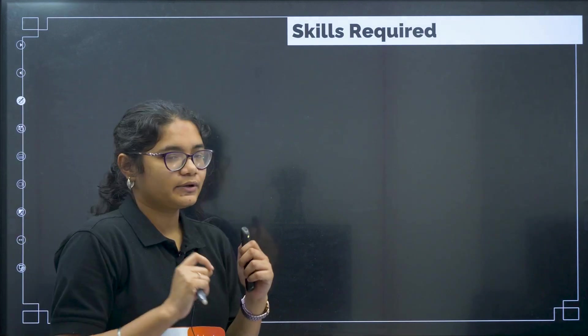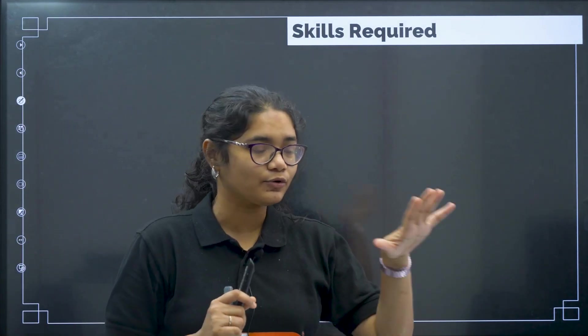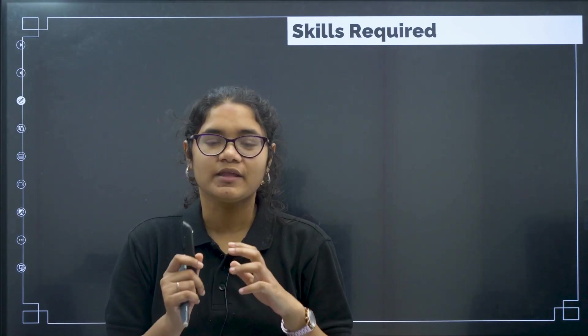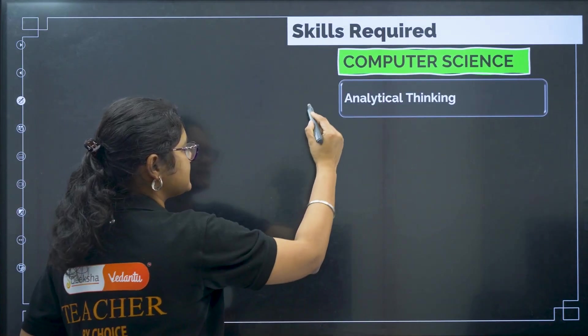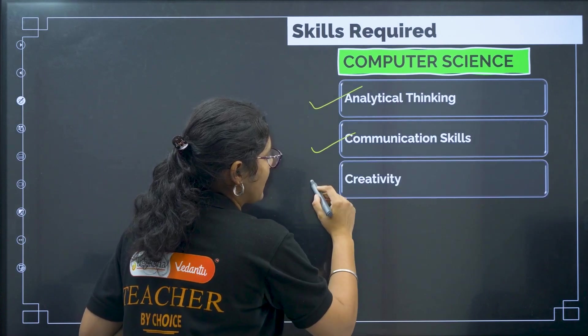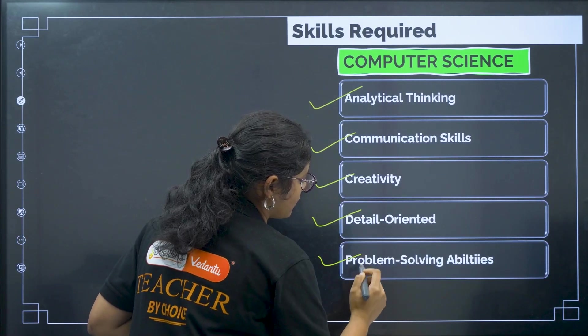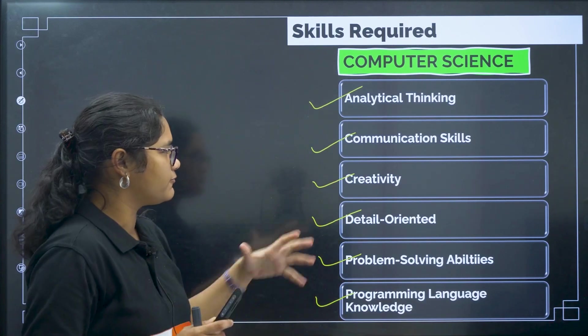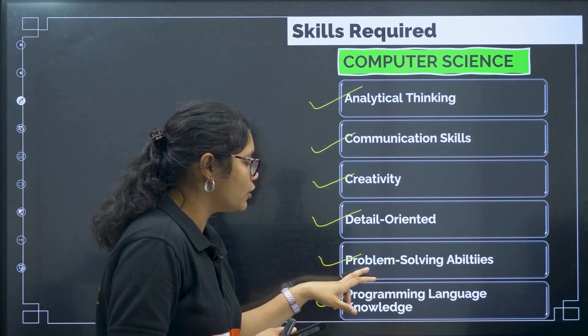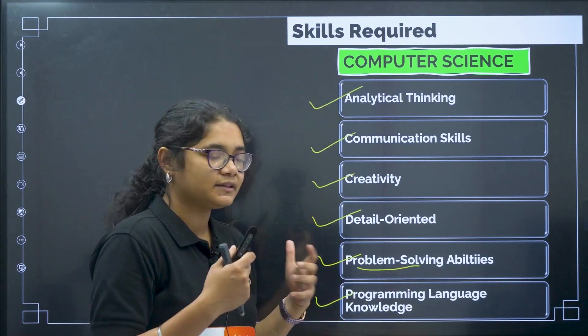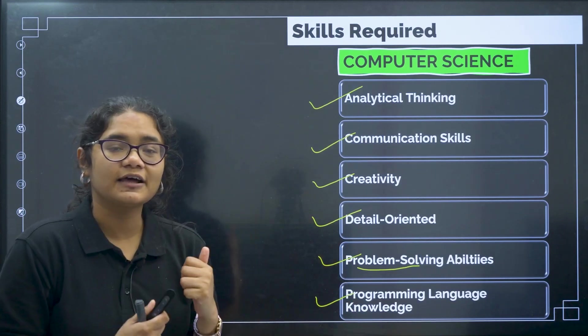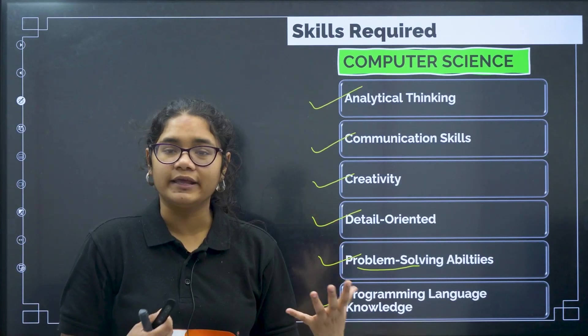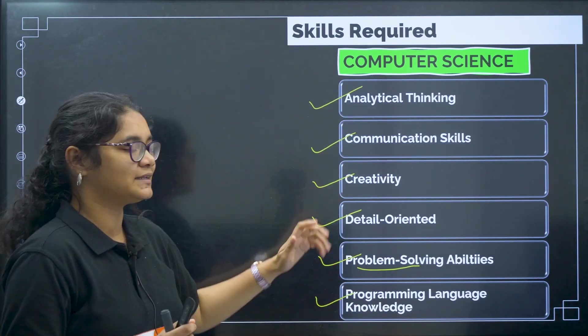Now coming to the skills required — this is very important so that you can decide which branch suits you. You need to know what skills you have and which skill set matches these two branches. Skills required for computer science are: analytical thinking, communication skills, creativity, being detail-oriented, problem-solving abilities, and programming language knowledge. If you can think analytically, have strong problem-solving abilities, and enjoy computer languages like C++, Python, and Java — if you enjoy writing code for different programs — then computer science is definitely for you.